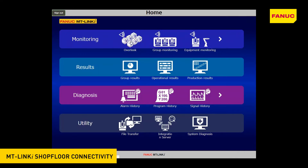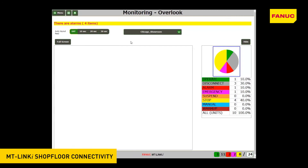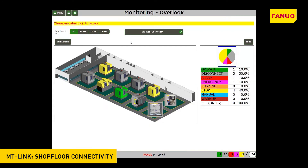The Overlook screen enables you to monitor the state of the whole factory in real time, so that you can recognize the states of the machines and promptly start recovery work when abnormal events occur. When warnings occur on the machines in a factory, this function alerts you of the warning events by blinking the machine icons on the Overlook screen.